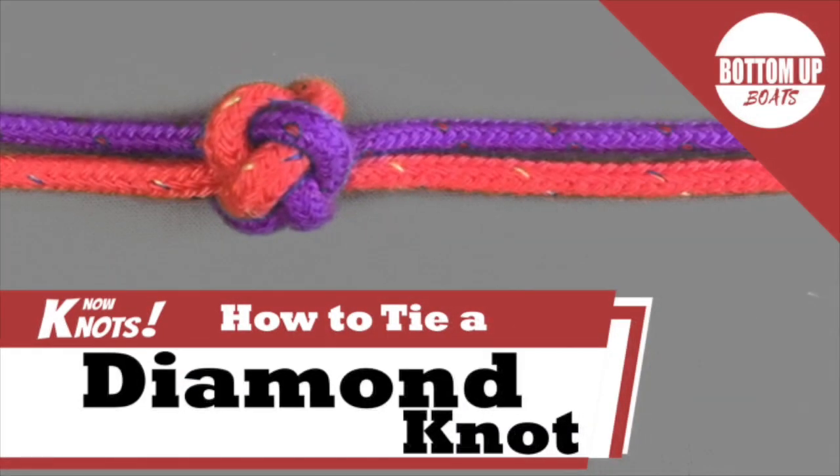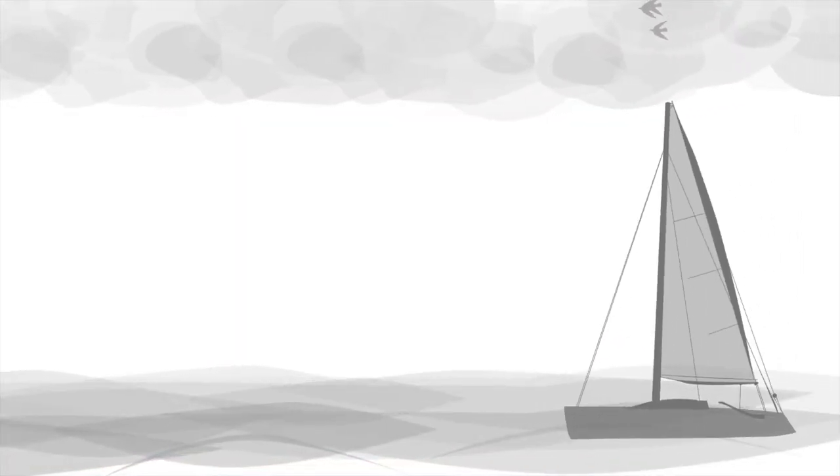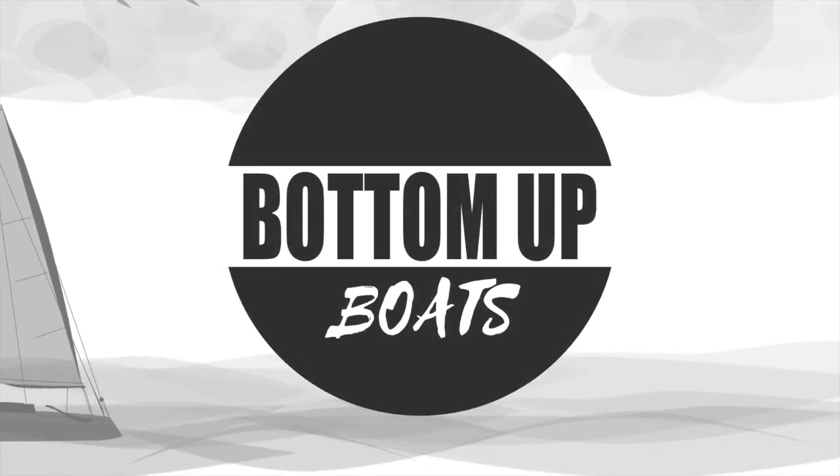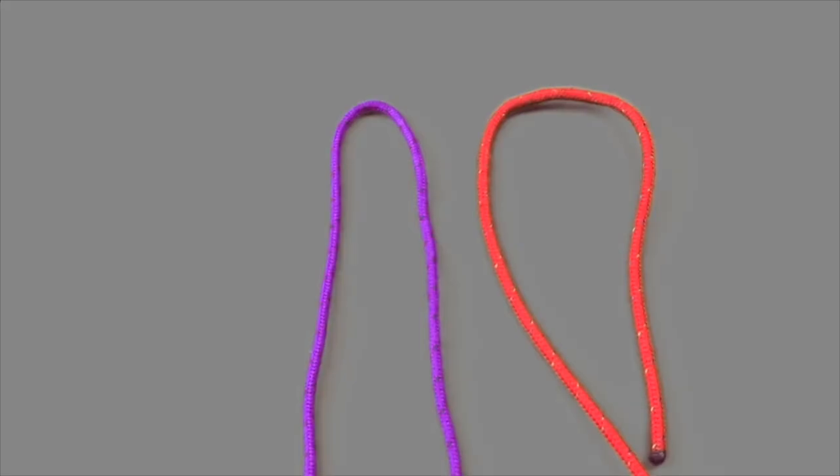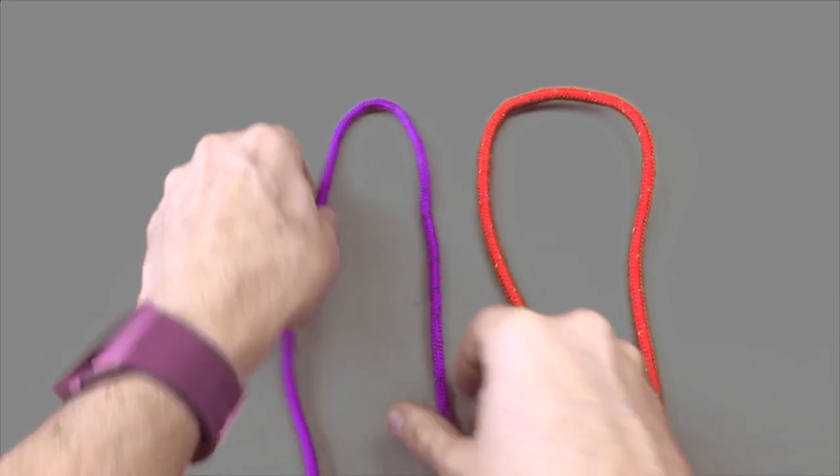G'day and welcome to today's no knots episode where we take a look at how to tie a diamond knot. Today's episode we're going to tie the knot with two different colored cords. This makes it easier to see how the knot develops.